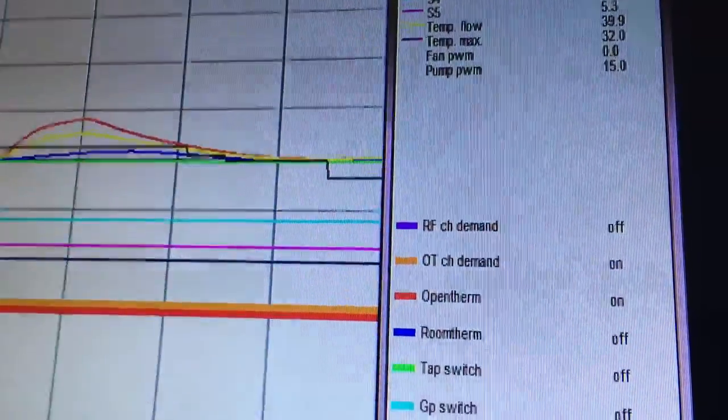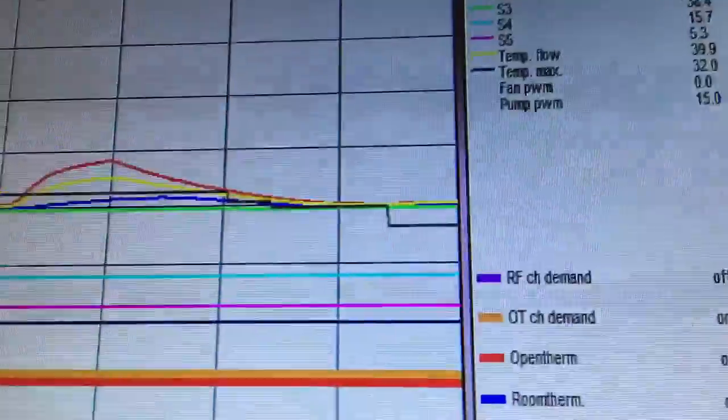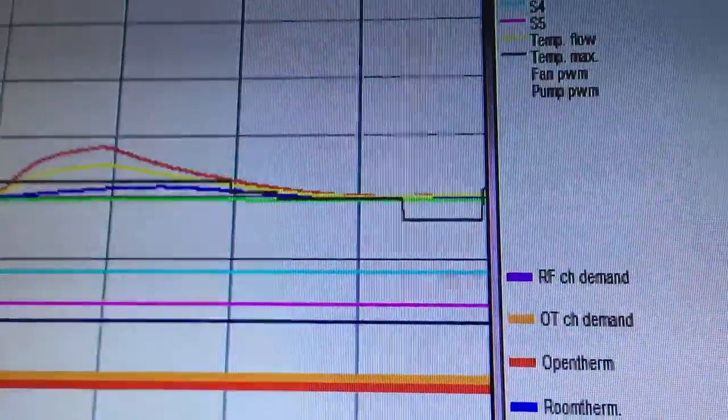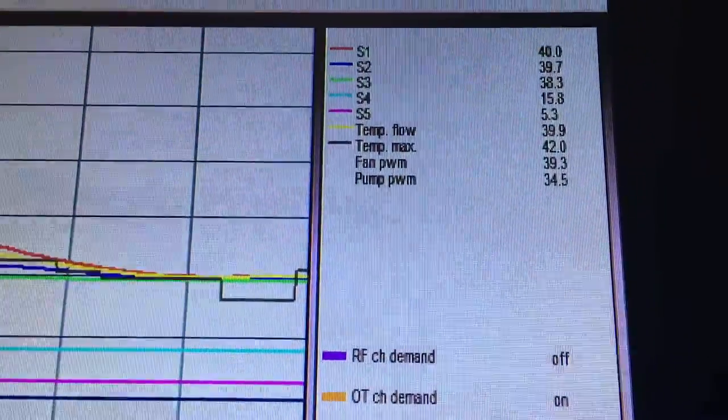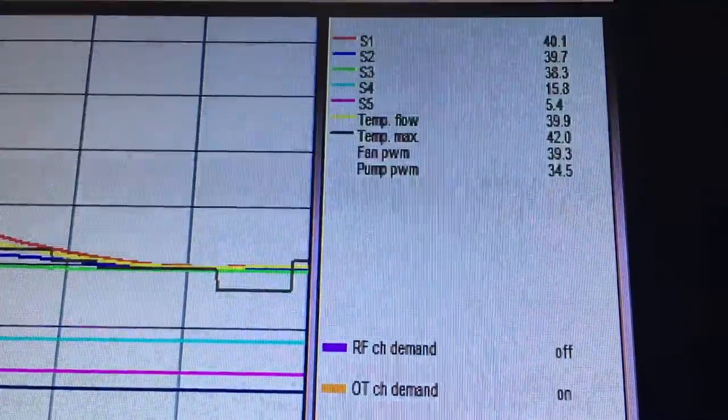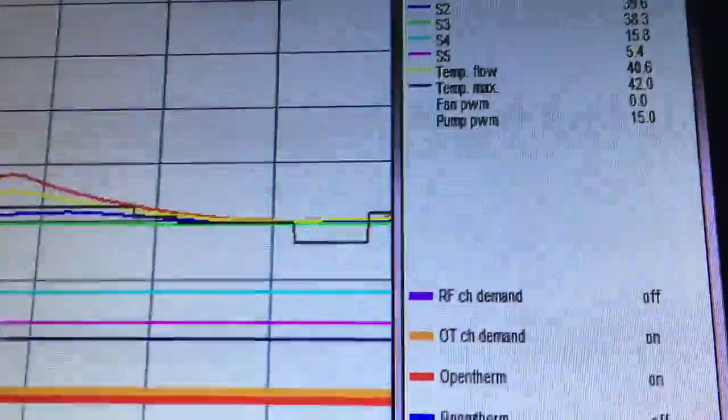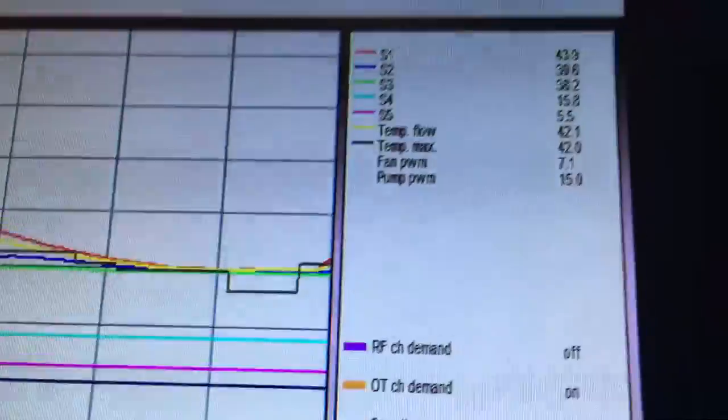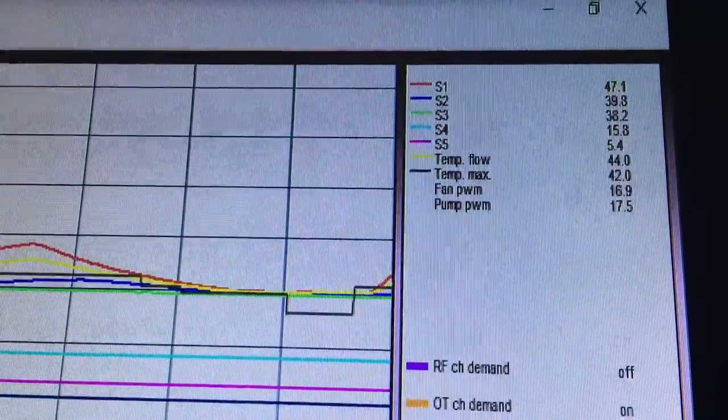So if I put that to 19 degrees—so I've just upped the thermostat now to 19 degrees—you look at the black line, which is the control set point. So now you can see the temp max gone up to 42. Okay, and if I up this another degree up to 20 degrees, if you look at the temp max again...